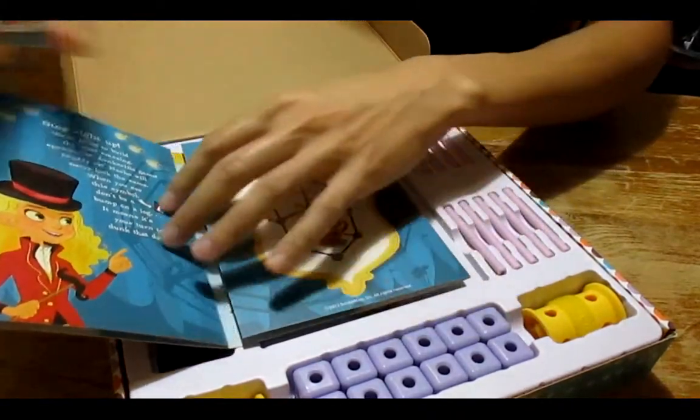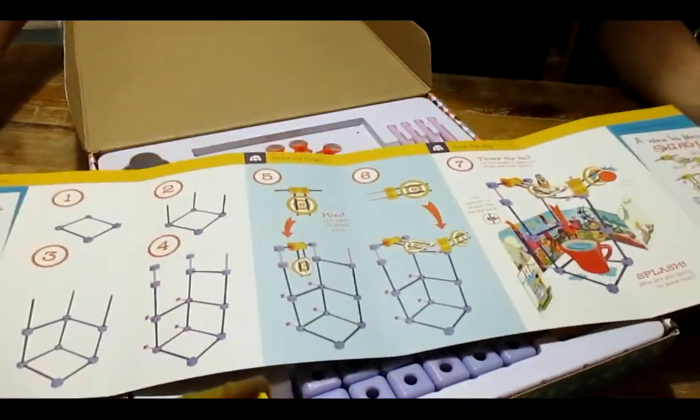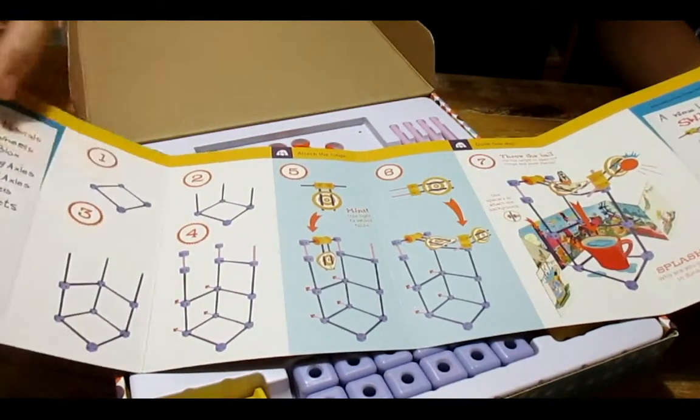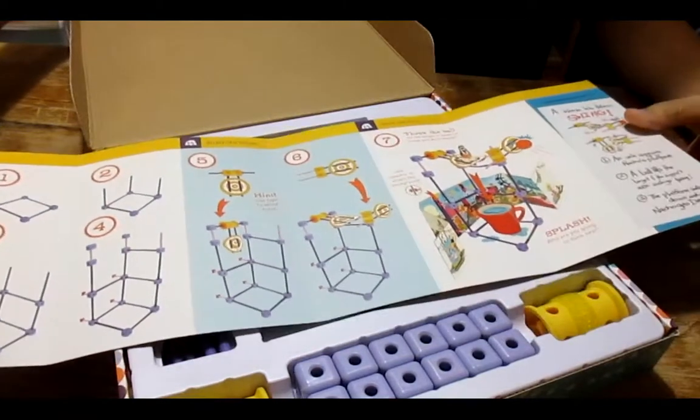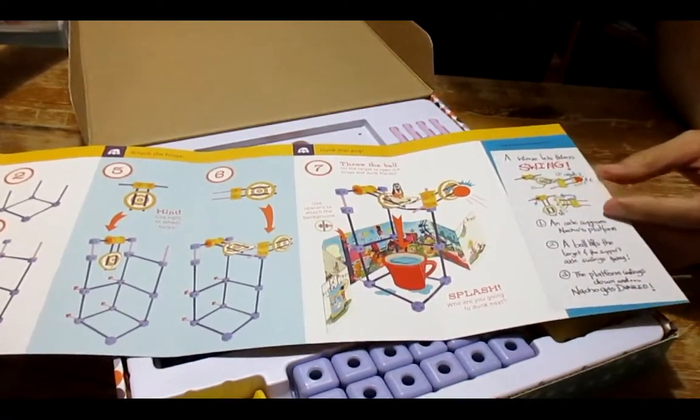This here is the instructions and as you can see very easy to follow along, very colorful: one, two, three, four, five, etc. And here at the end of the instructions it talks all about the engineering concept in simple terms, what they're trying to teach with the set.